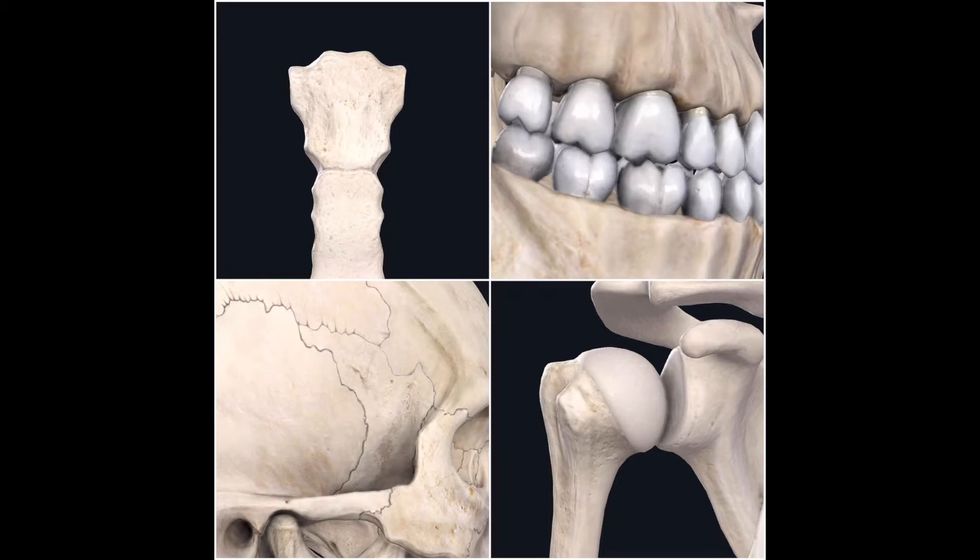In this image right here, I have four pictures of four different parts of the skeletal system. Now the question is, apart from them being skeletal structures, what is the one thing they have in common with each other?